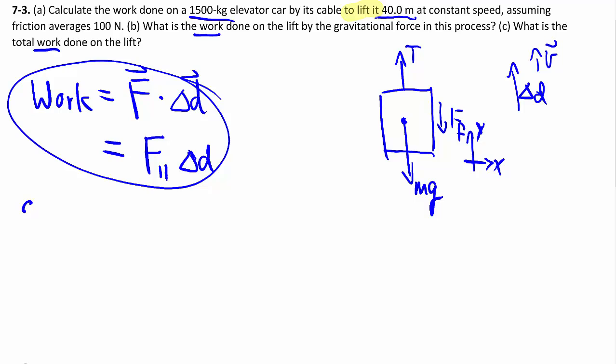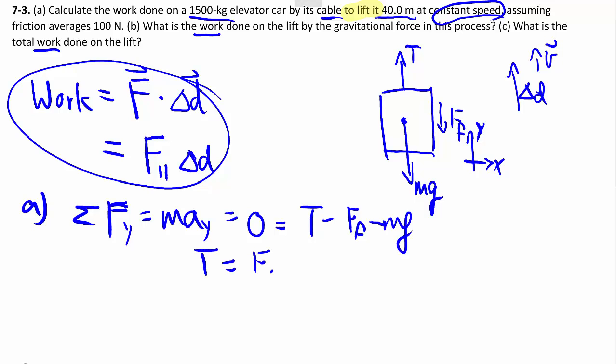First off, in part A, we want the work that is done by the cable, the tension. I guess then we have to find out what the tension is. Same as always from chapters before, sum of forces in the Y direction is equal to M times A. But because we're constant speed, that is going to be zero. I list out my forces: T is positive, minus FF, minus MG. So clearly, T is equal to FF plus MG, isolating it so we can work out a number.